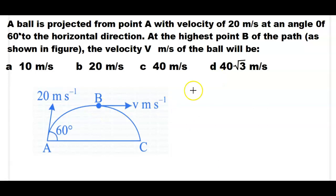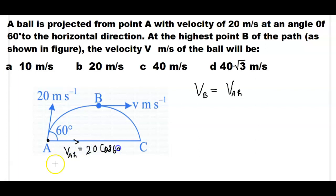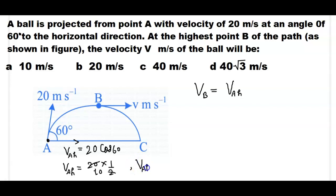We need to calculate the velocity at point B. The velocity at point B is equal to the horizontal component of velocity at point A. The horizontal component at point A is 20 cos 60°. Since cos 60° equals 1/2, we get 20 × 1/2 = 10 meters per second.